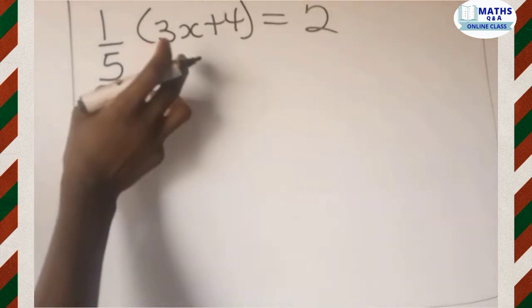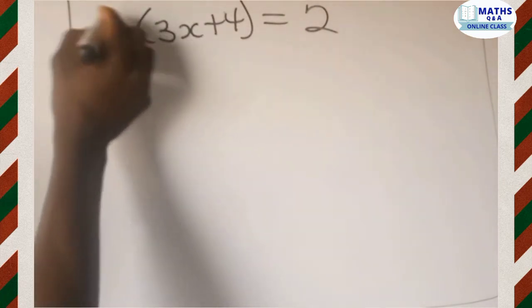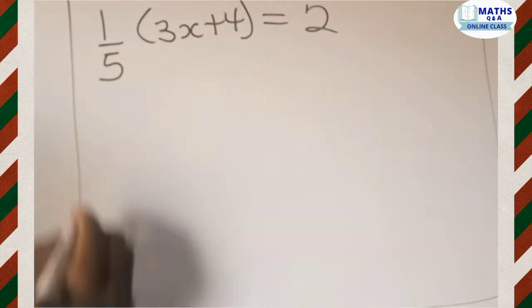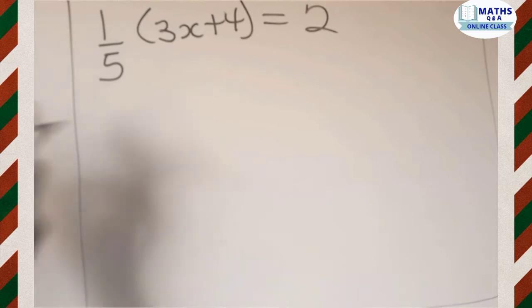You see that we have a fraction in it and we have only one fraction which is multiplying 3x plus 4. So we take the denominator of the fraction as the LCM for the entire question.